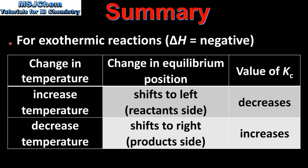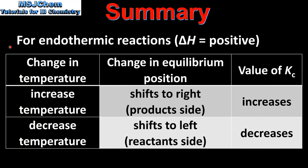To summarise: for exothermic reactions, when the temperature is increased the equilibrium position shifts to the left and the value of Kc decreases; when the temperature is decreased the equilibrium position shifts to the right and the value of Kc increases. For endothermic reactions, when the temperature is increased the equilibrium position shifts to the right and the value of Kc increases; when the temperature is decreased the equilibrium position shifts to the left and the value of Kc decreases.